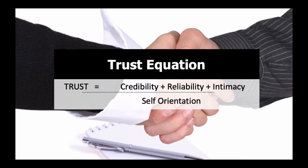So we have credibility, reliability, and intimacy on the top line of the equation. On the bottom line is just one factor: self-orientation — how oriented are you towards yourself versus towards adding value to the customer? It doesn't mean you can't make money by being customer-focused, but in your conversations with clients, are you focused on doing the right thing by them, or just interested in getting money out of them? We've all met salespeople who were just out to sell us something whether it was right for us or not — those people have very high self-orientation.